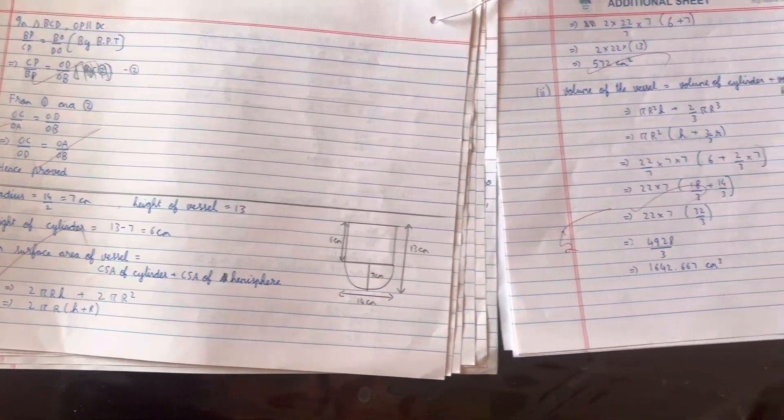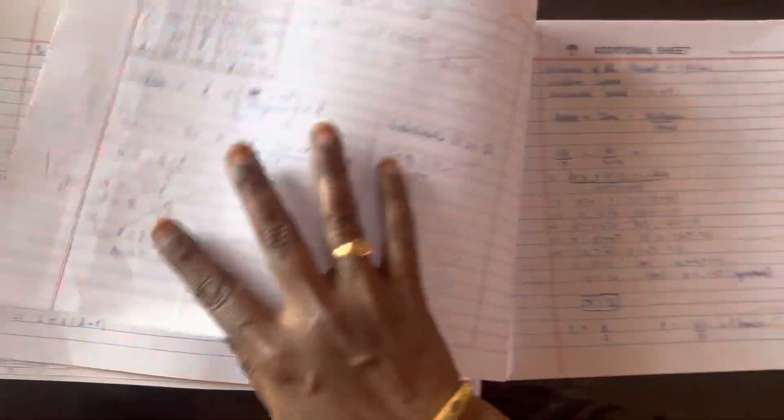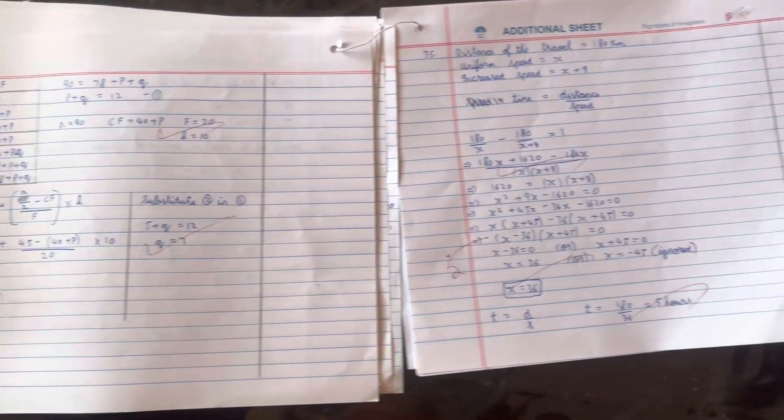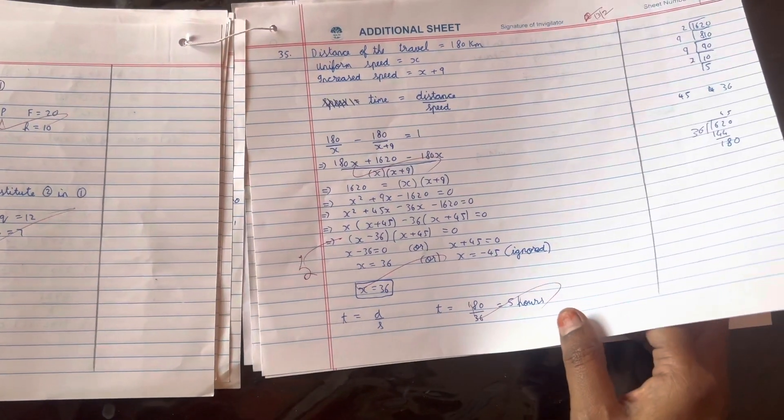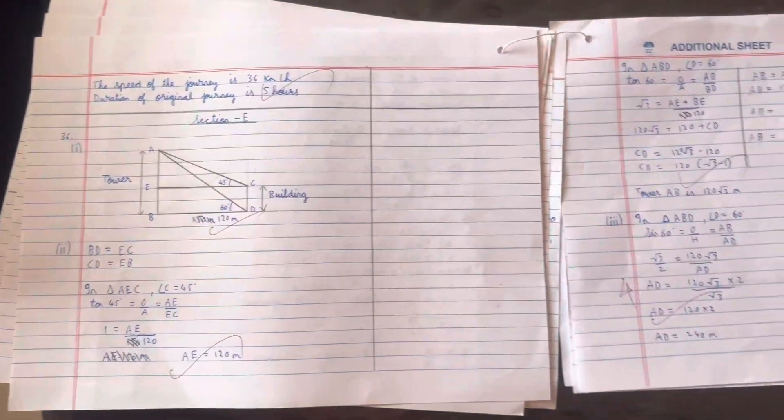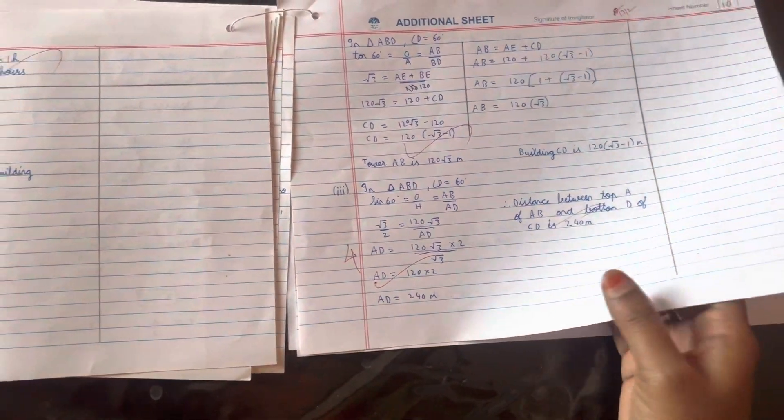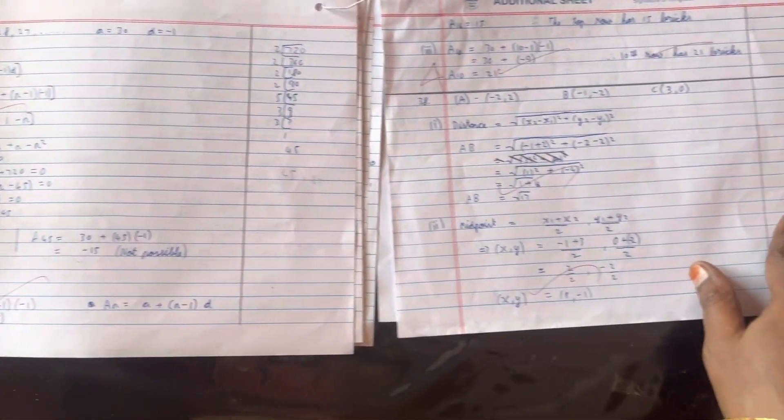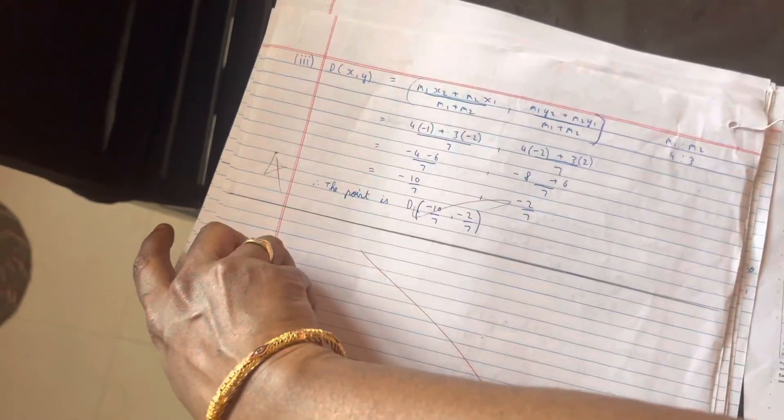Then this is a surface area volume question that seems to be a sure five marker. This is your statistics, and this is the speed question. And this is the case study. Look at the way he's done the case study very neatly - all the relevant steps are here and he's done it very well.